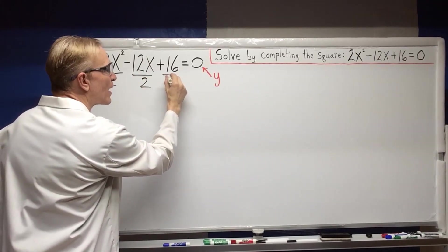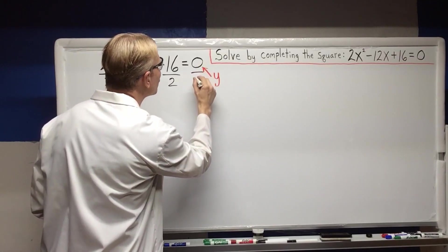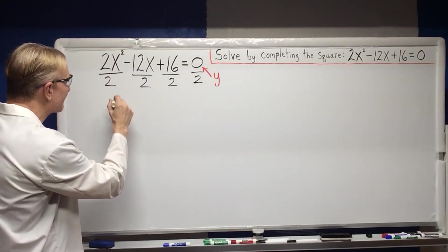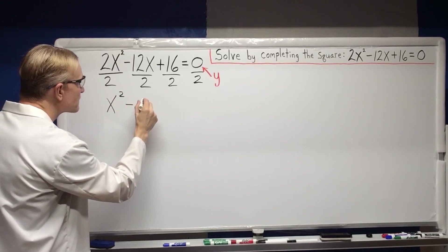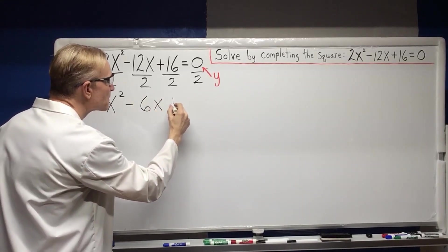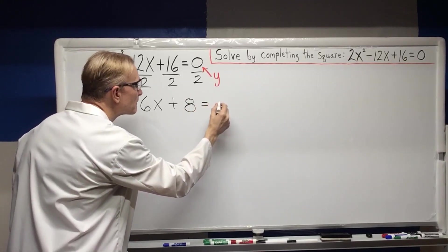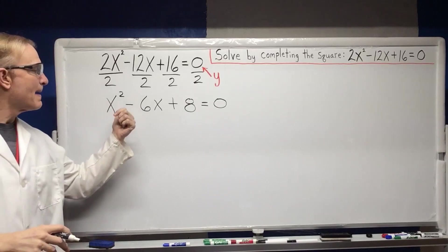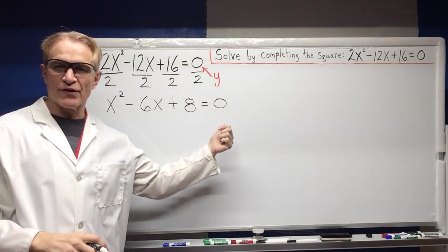Getting the X squared by itself. This gives us X squared minus 6X plus 8 equals zero.